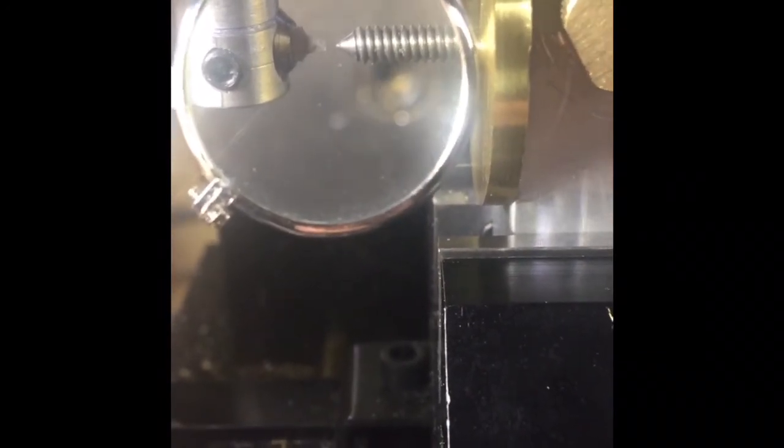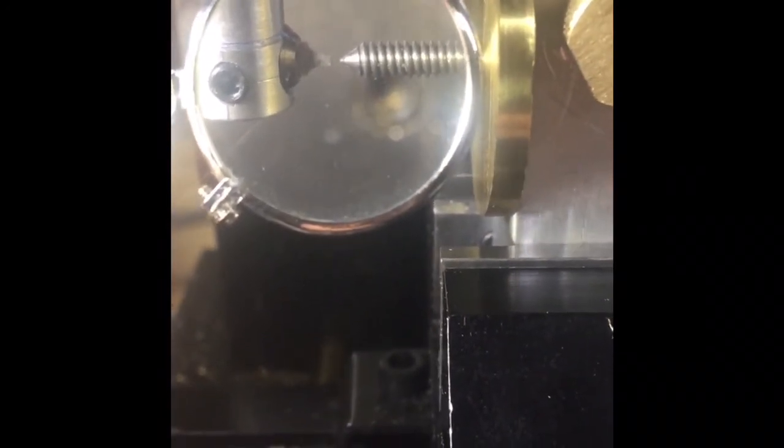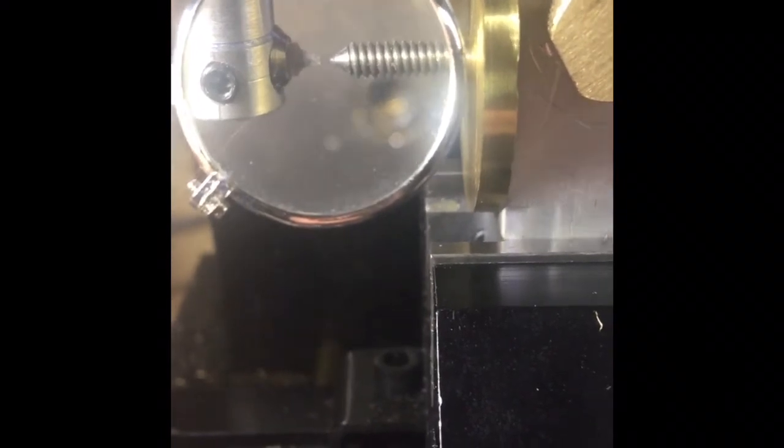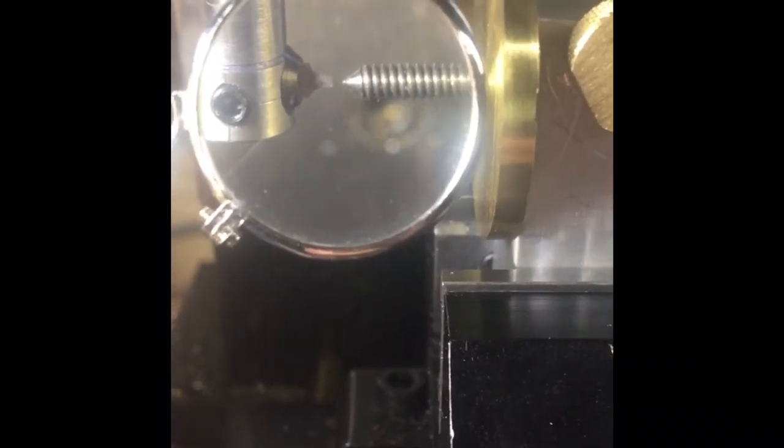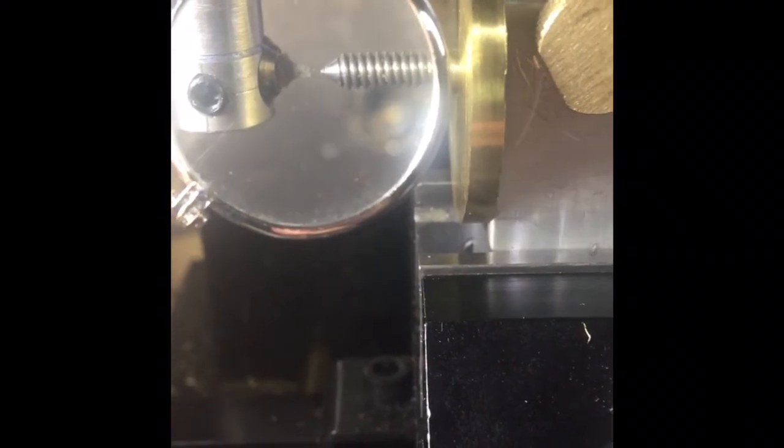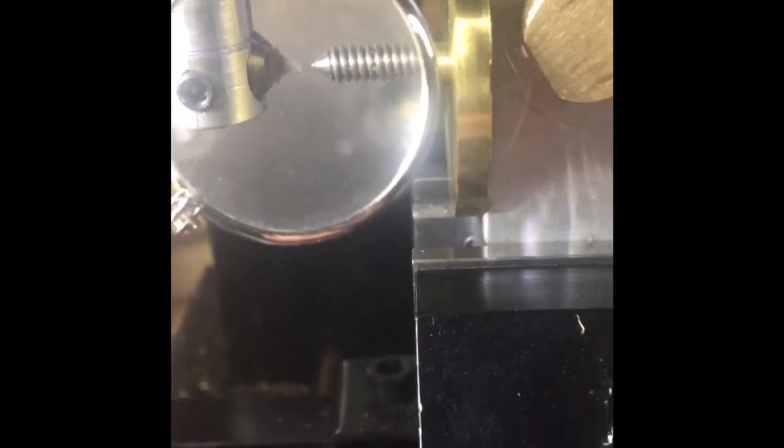We're going to call that good. Now that I have zero, I can begin taking depth passes and rotating the wheel around, indexing it to achieve the final tooth depth. It usually takes about four or five cuts to establish the correct depth.